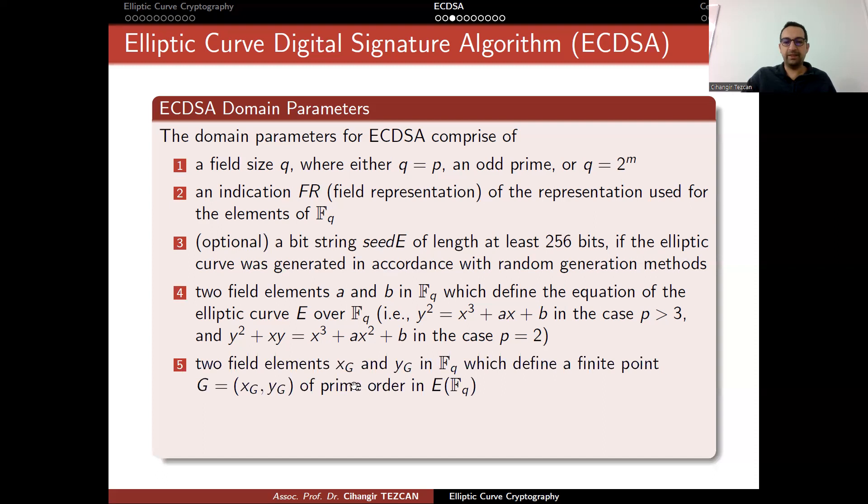Two field elements XG and YG in FQ, which define a finite point G of prime order in this elliptic curve, so this will be our generator point. The order N of the point G with N is larger than this number, and also larger than this, so that it can provide 128-bit security. The cofactor is also calculated like this, and this H number is somewhat important when we define an elliptic curve.